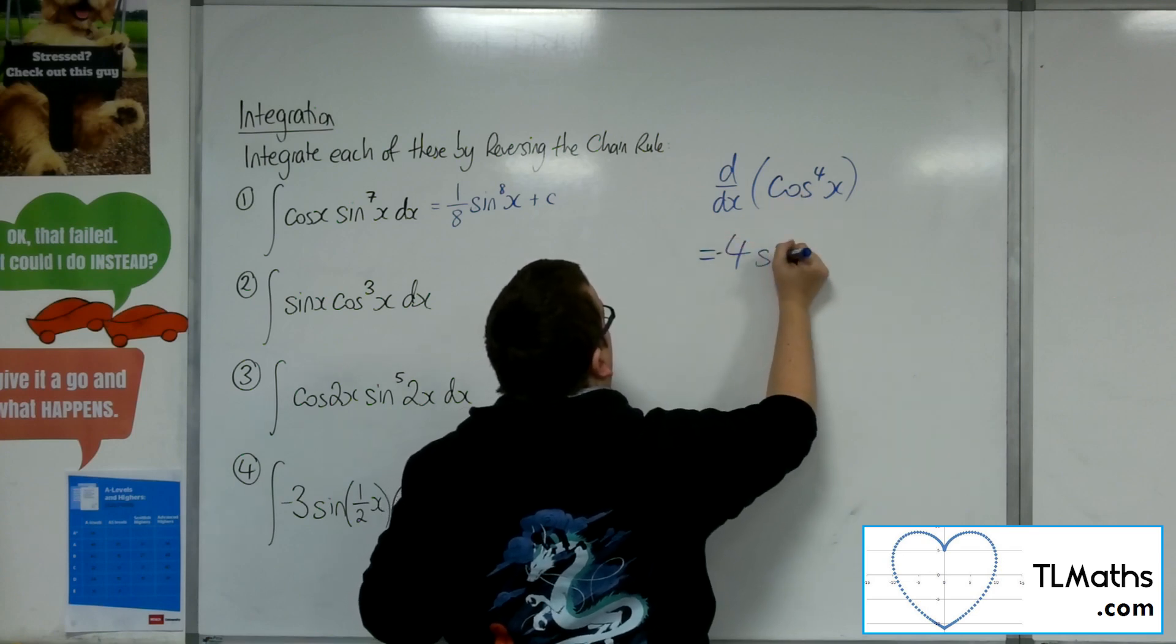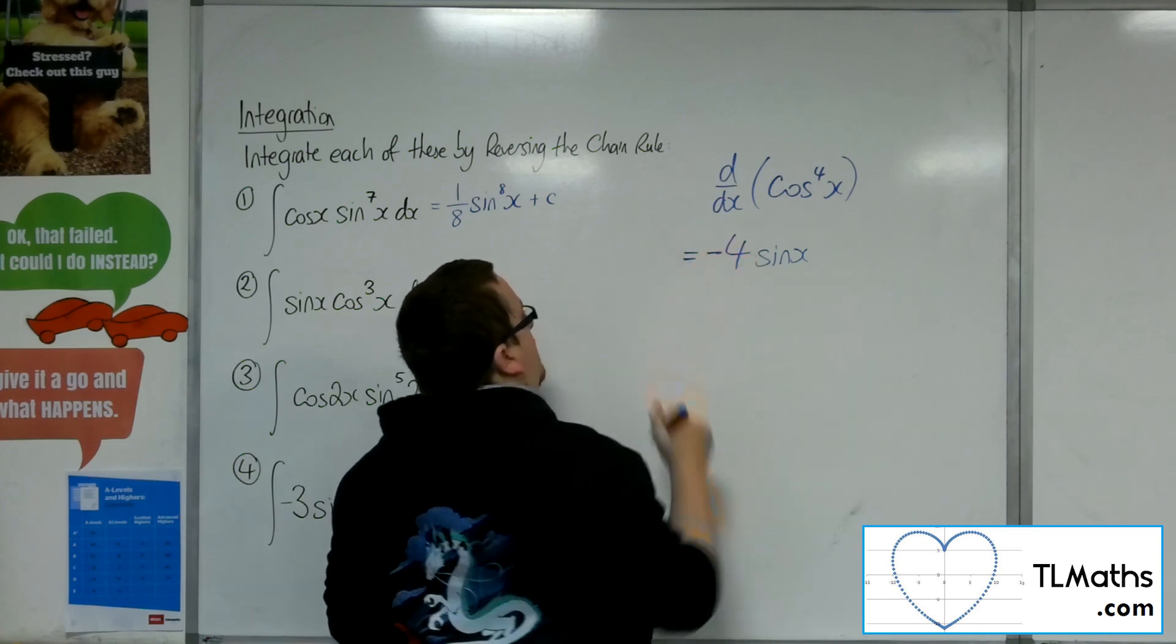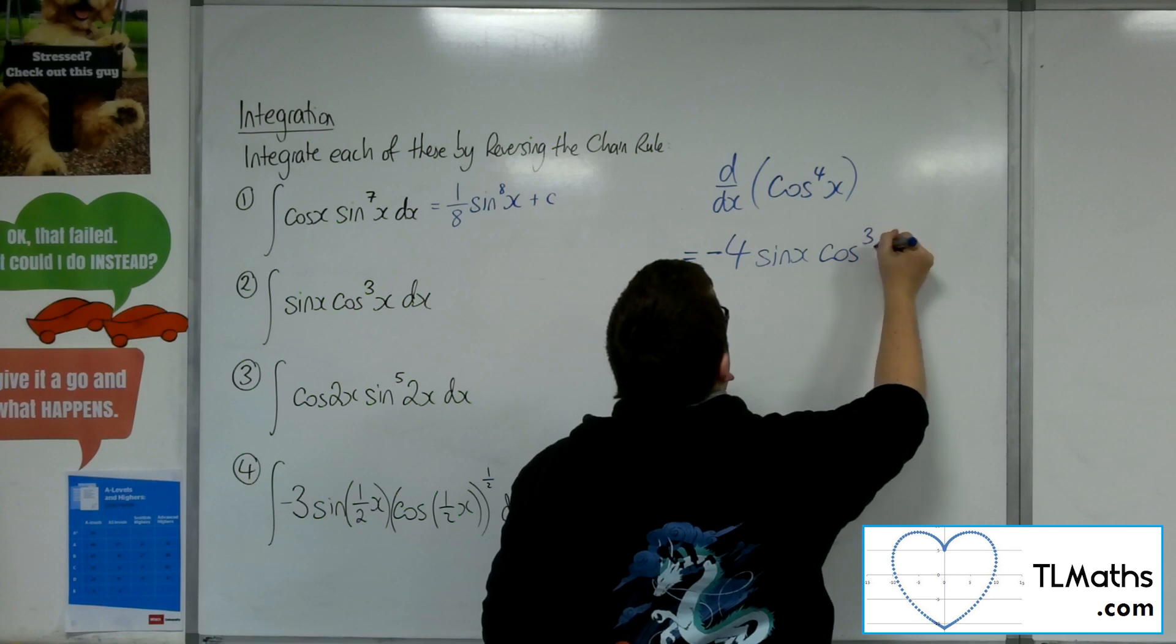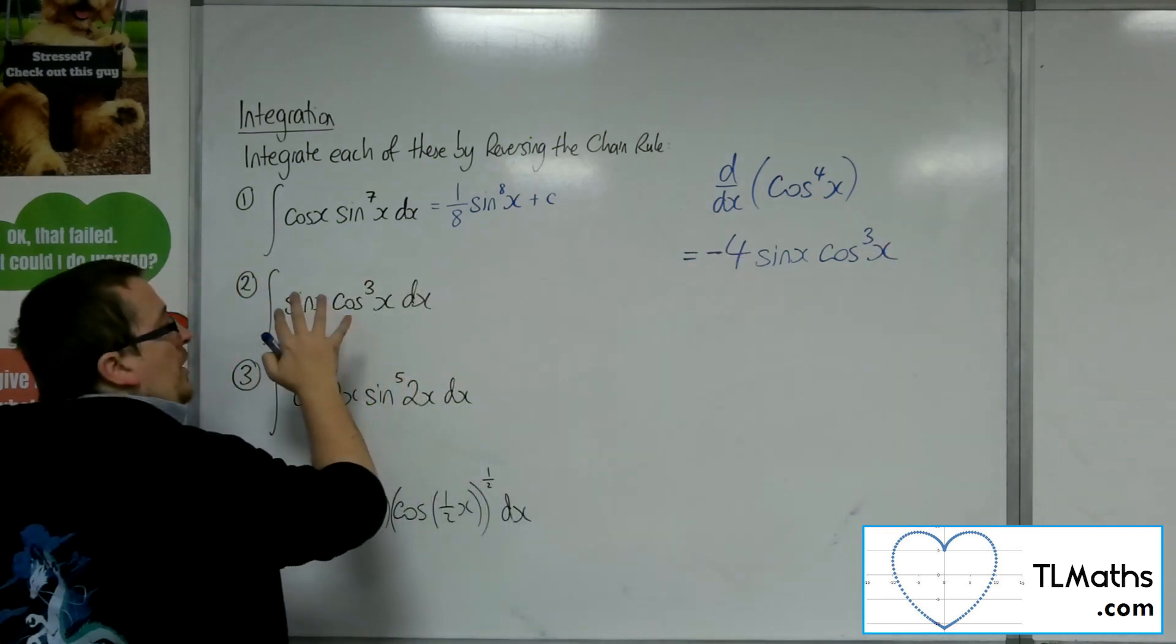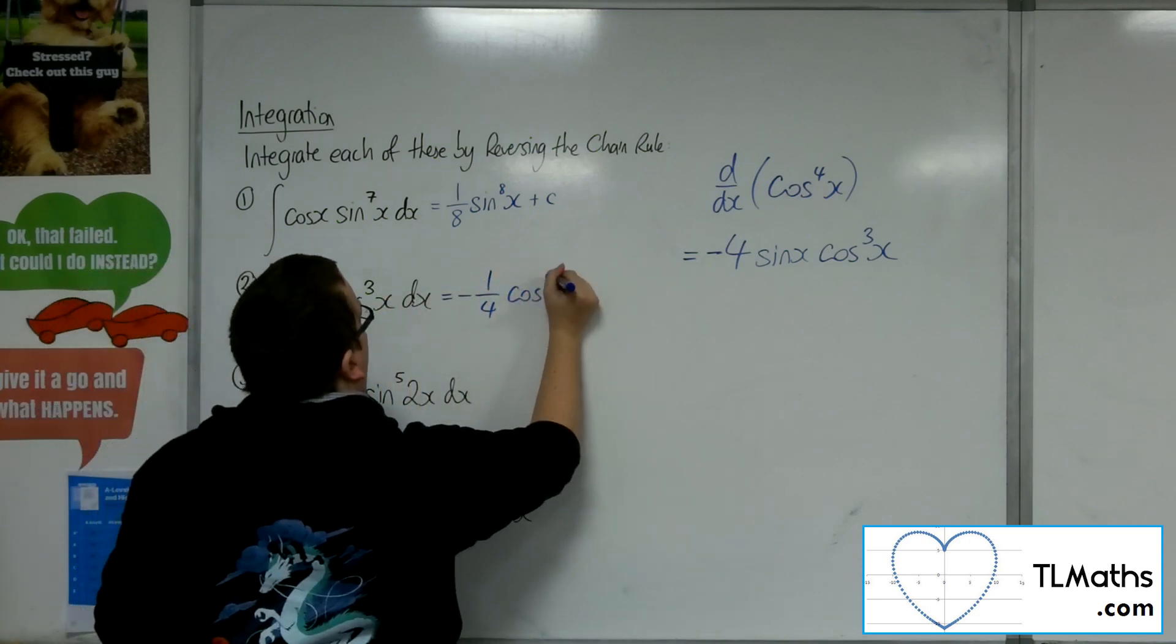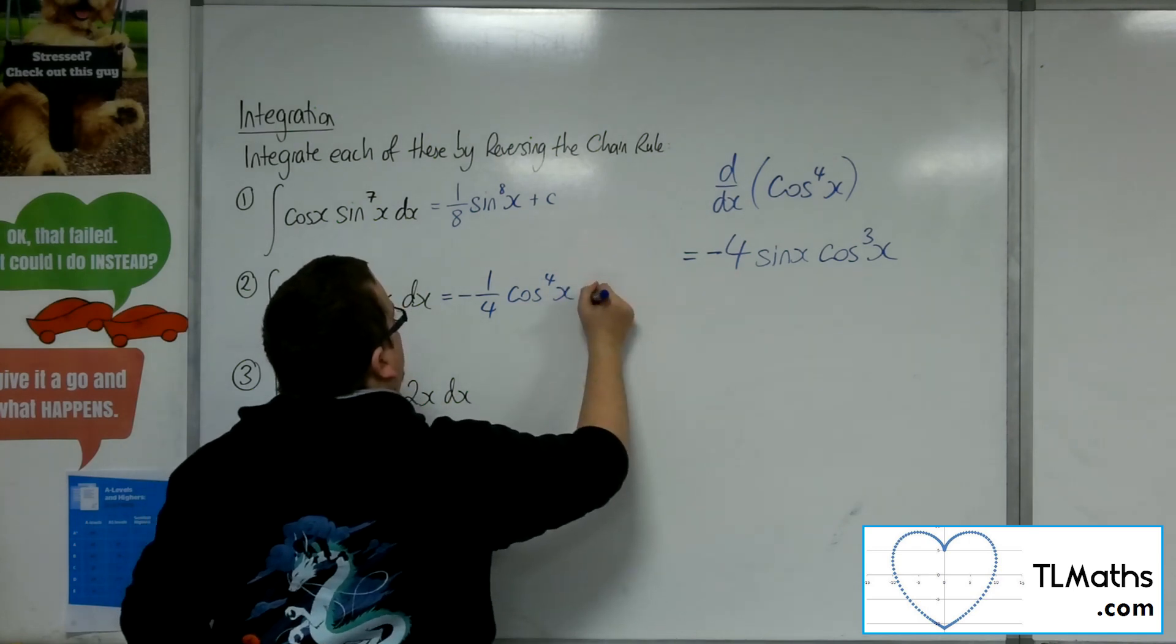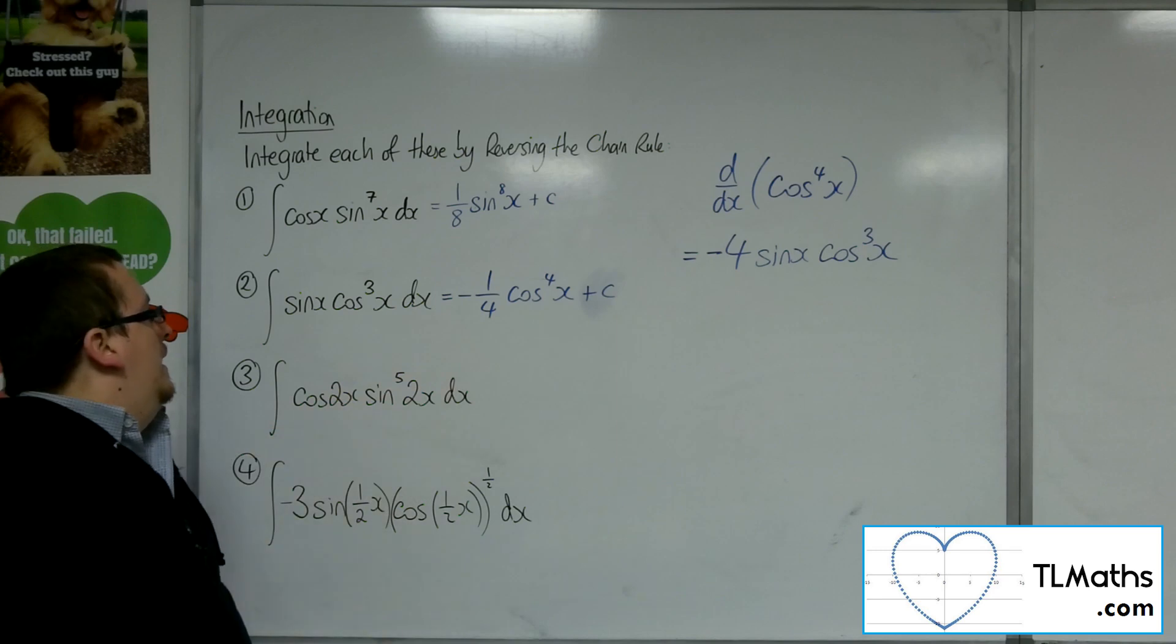So if I give myself a little bit more space, so it'll be a minus 4 sine x, and then drop 1 from the power for the cosine. So I've actually got minus a quarter of what I need. So that would be minus 1 quarter cosine 4 of x. Sorry, not dx. Keep on making that mistake. Plus c. OK? So that's number 2.